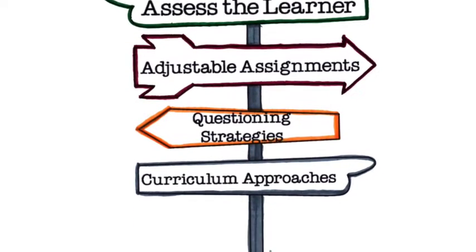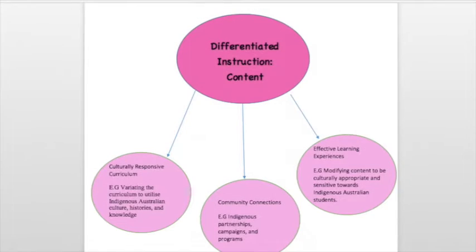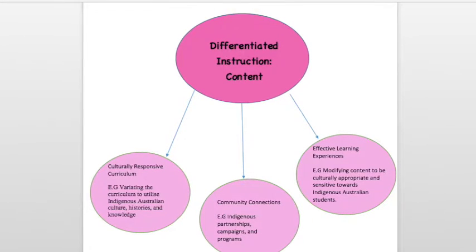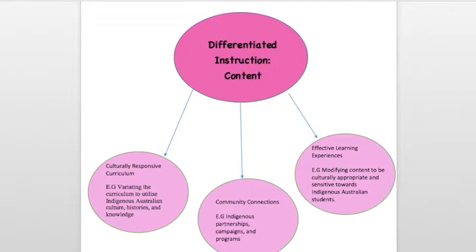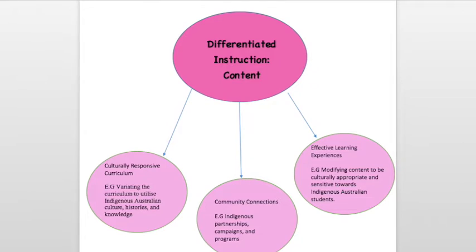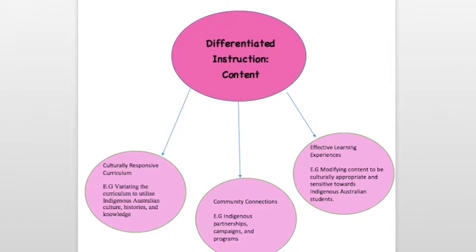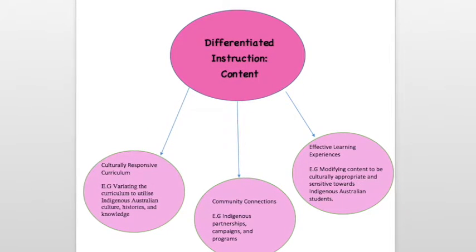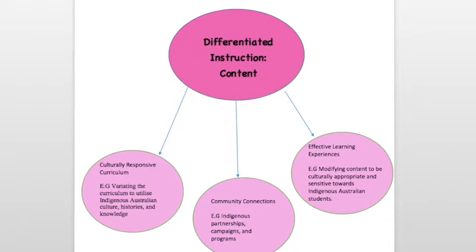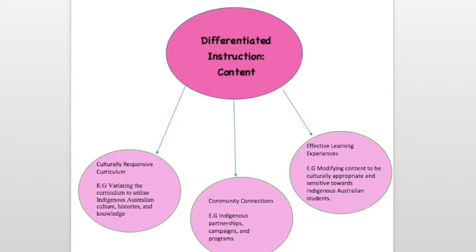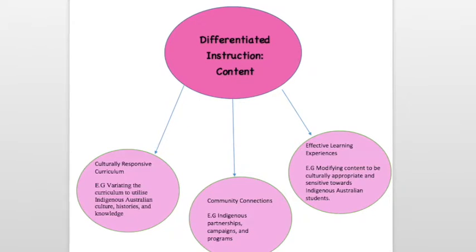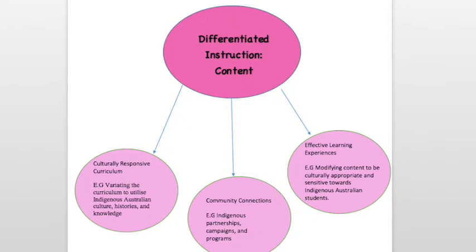The delivery of content needs to reflect upon a culturally responsive curriculum. For example, the curriculum content must be varied to utilise Indigenous culture, histories and knowledge. This means incorporating Indigenous artefacts into the classroom, including the use of Indigenous art, Indigenous tools such as boomerangs and native Australian animal templates. Having community connections, including local Indigenous partnerships, campaigns and programs, can also be effective when modifying the curriculum content.